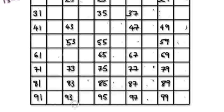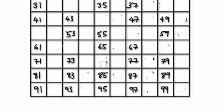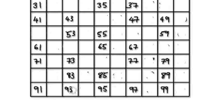Let me scroll down. 69 you can divide by 3. 75 you can divide by 3. 81 you can divide by 3. 87 you can divide by 3. 93 you can divide by 3. And 99 you can divide by 3.